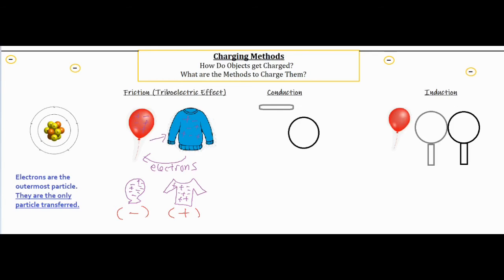Alright, so that's how friction or the triboelectric effect works. Our second one, conduction, is usually defined as charging by contact. So it's basically an object that sort of zaps electrons into another object.